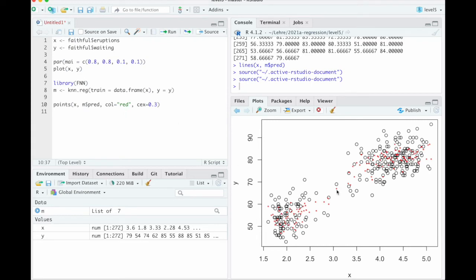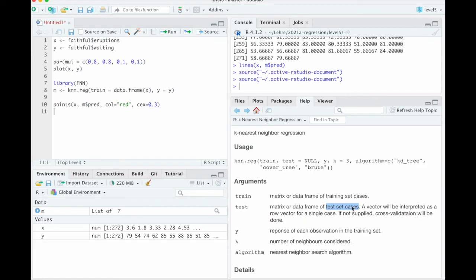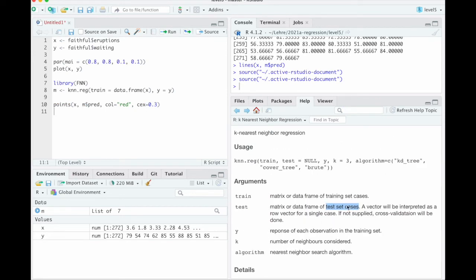So I think looking here in the middle, that probably what we get here are the fitted values. So there is a big black circle, which comes from here, which is one of our data points. And then just underneath is a little red circle, which comes from that points command. So I think what this does is it just gives us the k-nearest-neighbor estimate at the points where we have data. So I want to draw a smooth line. So what we need to do is we need to use the test argument.